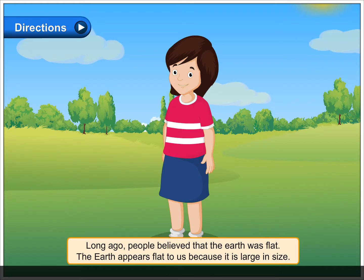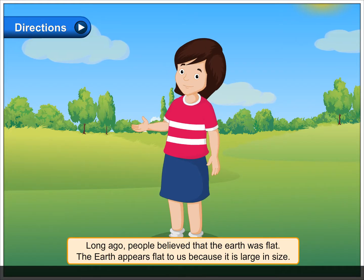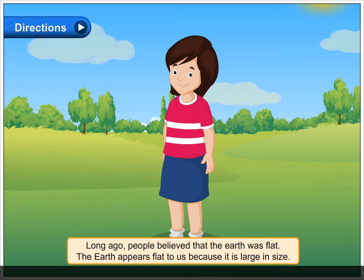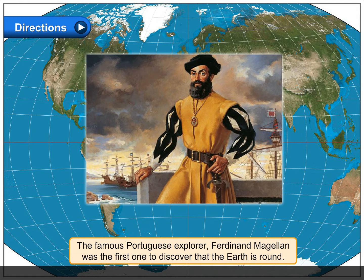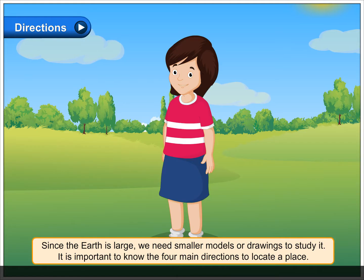Long ago, people believed that the earth was flat. The earth appears flat to us because it is large in size. The famous Portuguese explorer Ferdinand Magellan was the first one to discover that the earth is round.